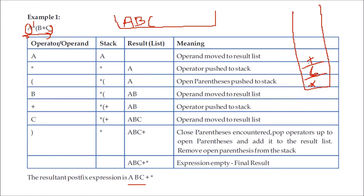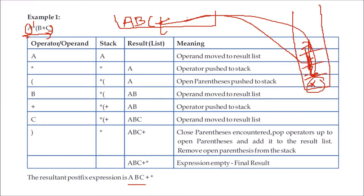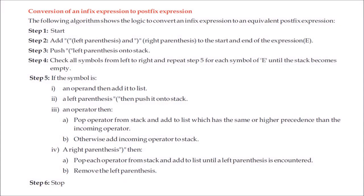When a closing bracket is encountered, you have to pop the operators from the stack up to the opening parenthesis. You add all the operators inside — from the opening parenthesis to the closing bracket — to the result list. Then you can remove the left parenthesis. The operators encountered are added to the stack; operands are directly added to the result list.